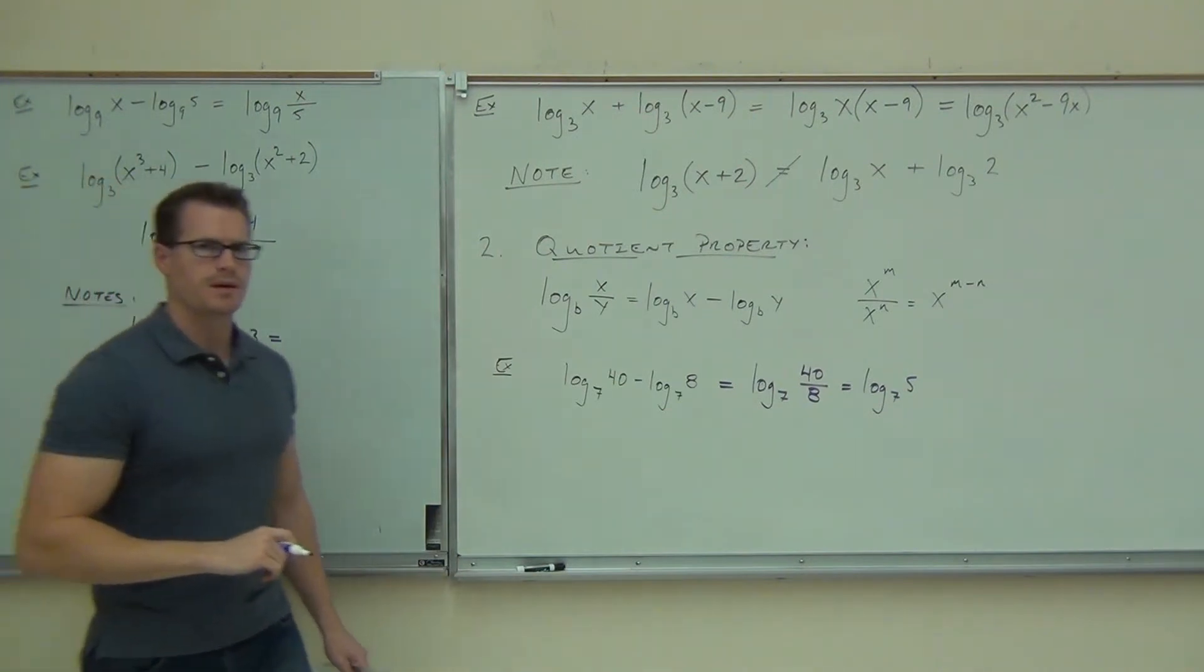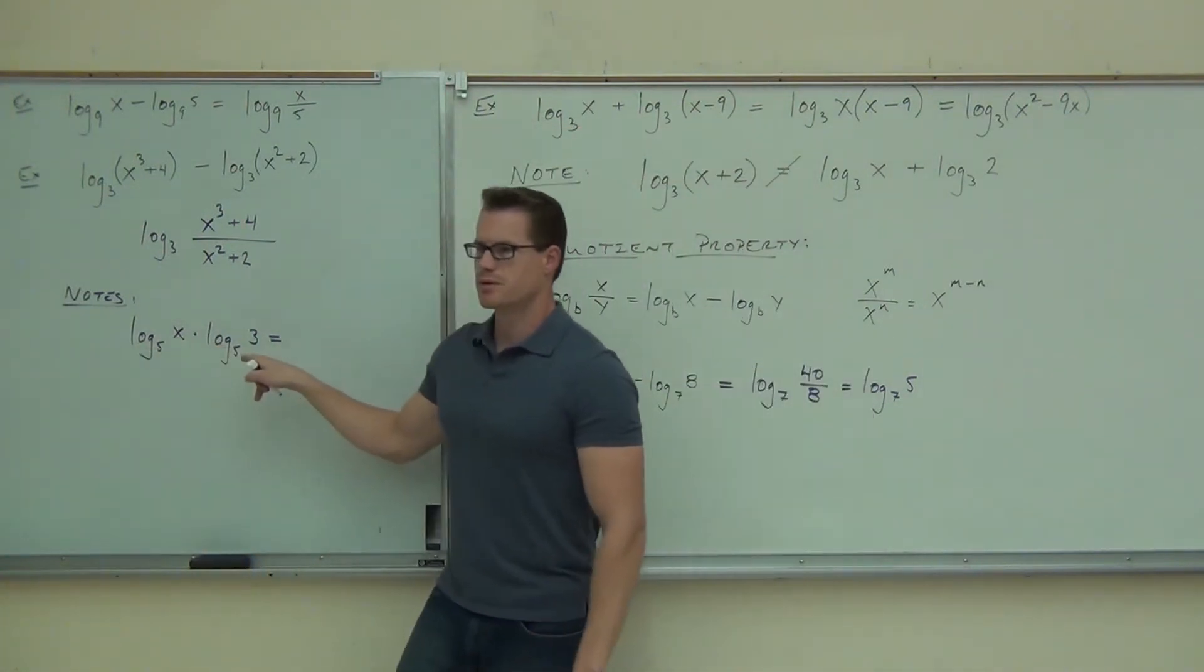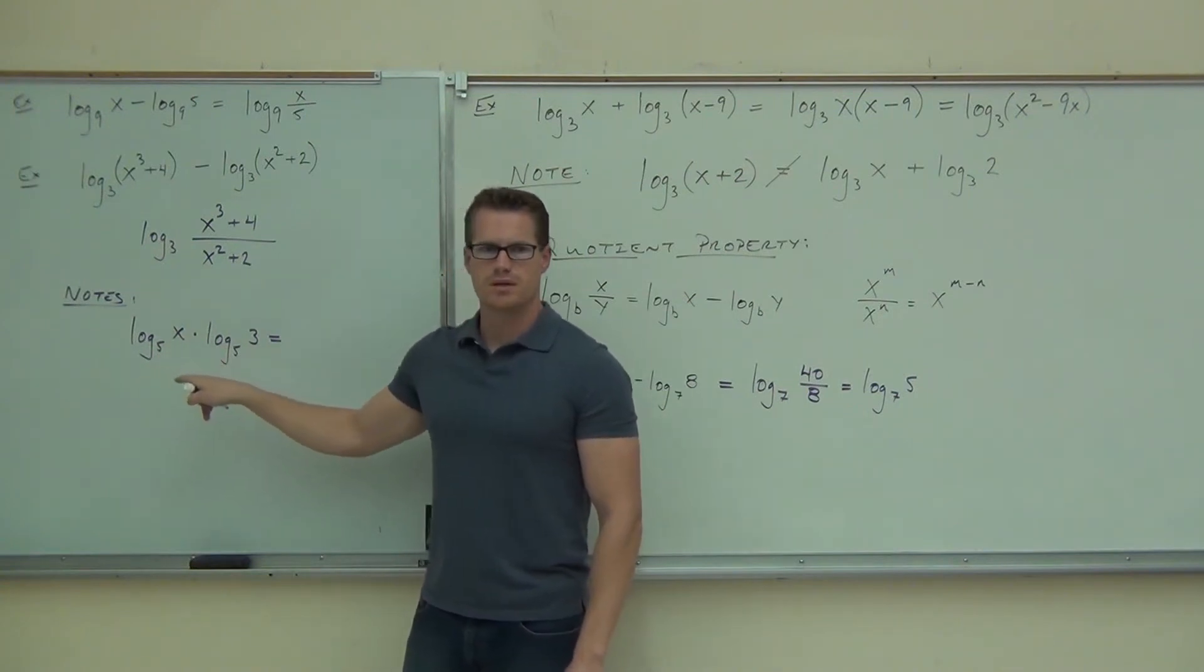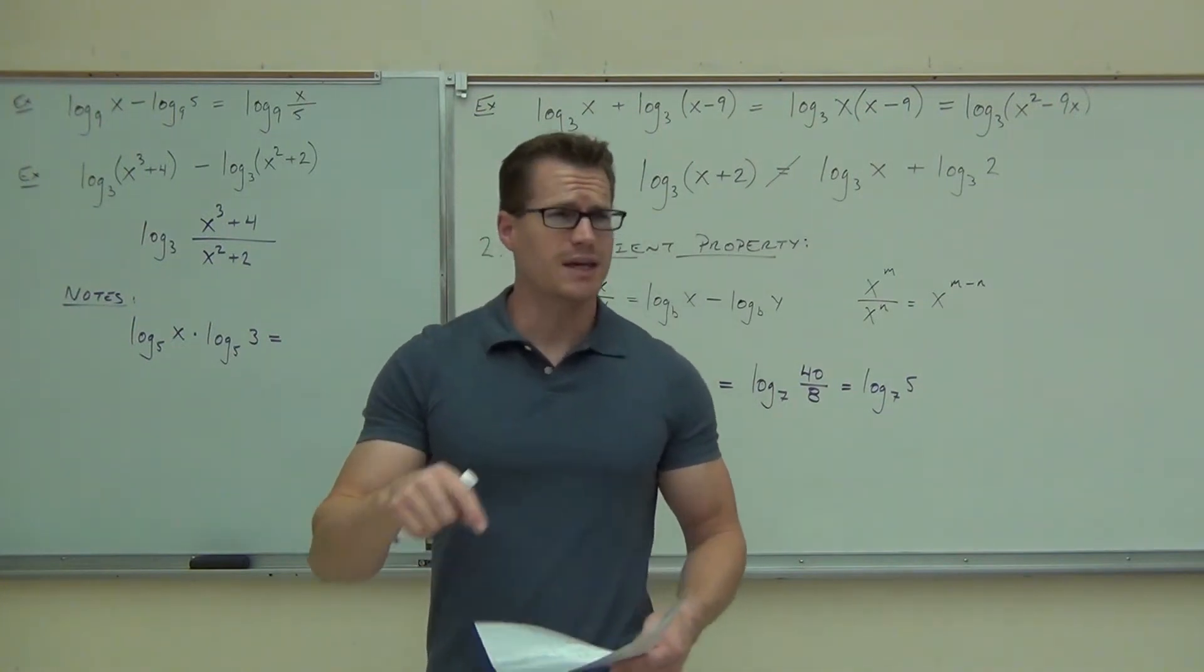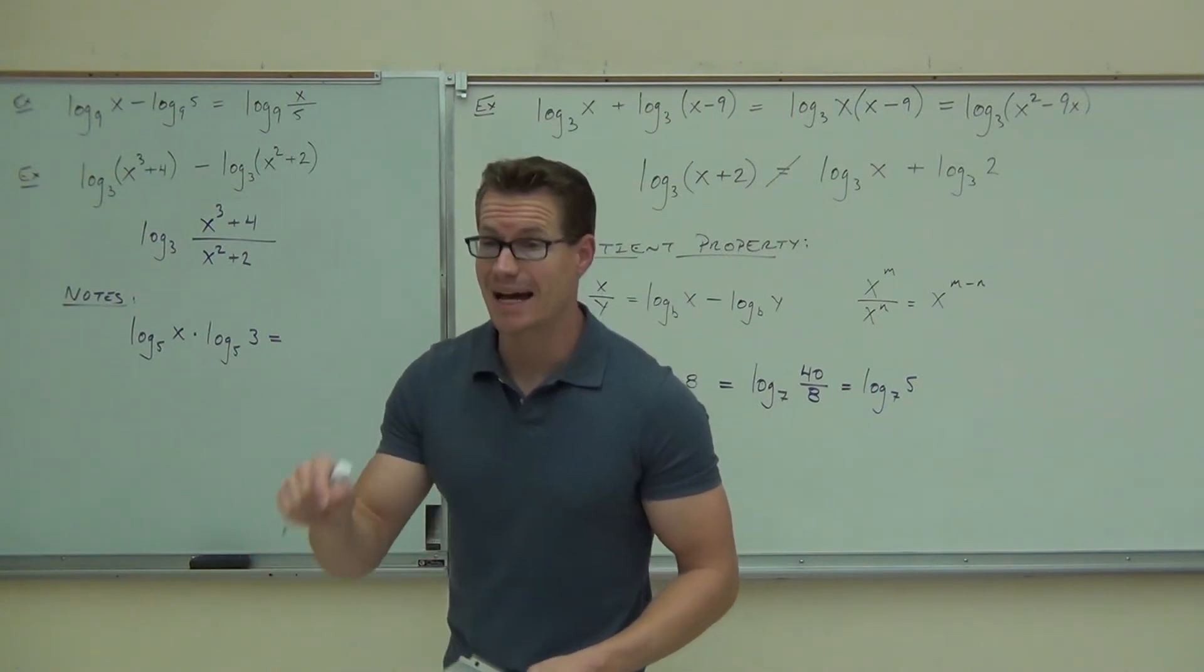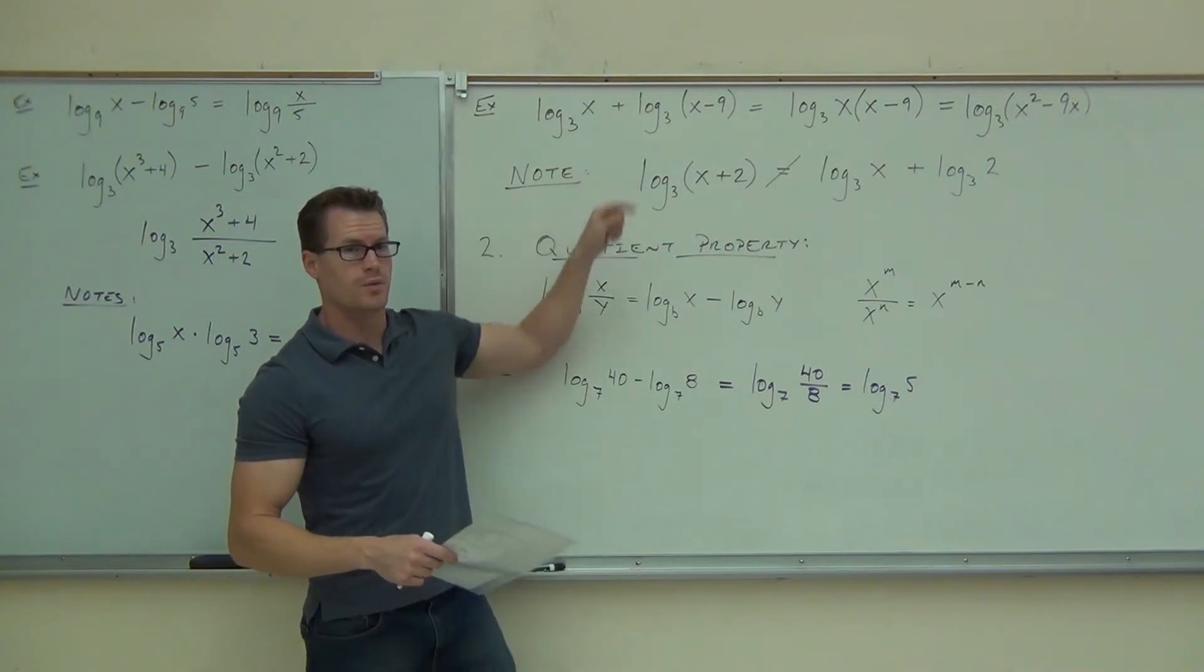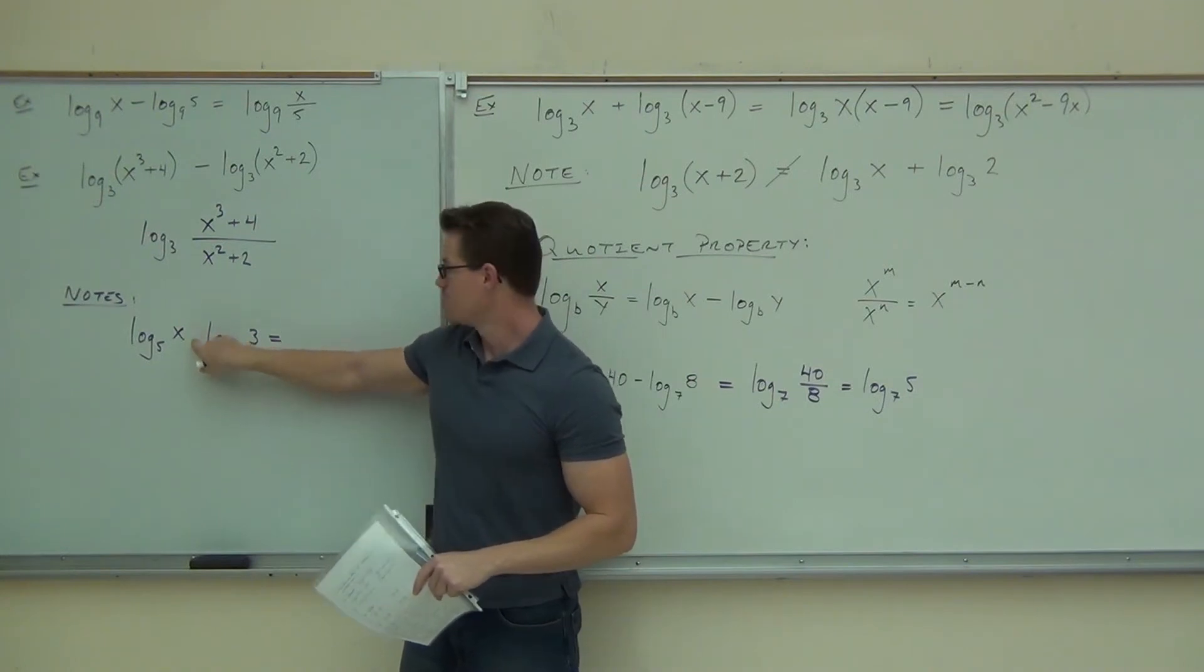Look back at your product property. Can you combine those? Look back at your product, look very carefully at your product property. Can you combine those? Do they fit? If it doesn't look, now listen. These properties are something where if it doesn't look exactly like it does on the paper, exactly like the property, you can't do anything with it. Does this look exactly like this one? No. This has two logarithms that are being multiplied together. Multiplied, not added.